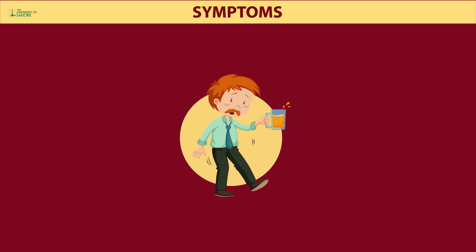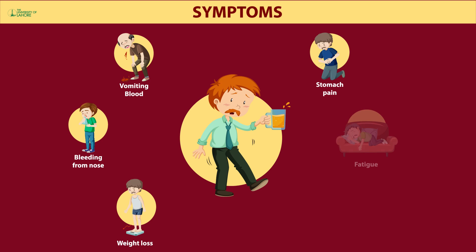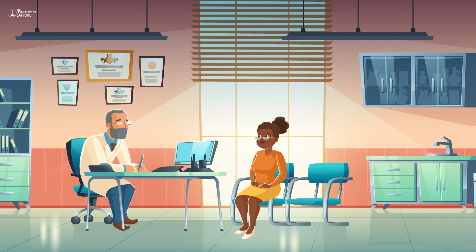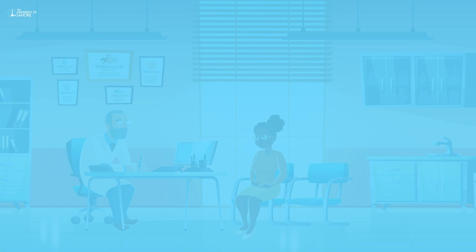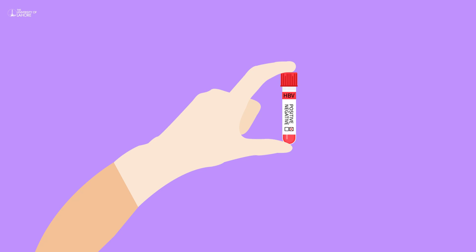Acute hepatitis may be accompanied by vomiting, bleeding from the nose, weight loss, stomach pain, fatigue, and jaundice. To make a diagnosis, your doctor may first evaluate your medical history to see whether you have any risk factors for infectious or non-infectious hepatitis. An abdominal ultrasound may also be performed to examine your liver and the organs around it.